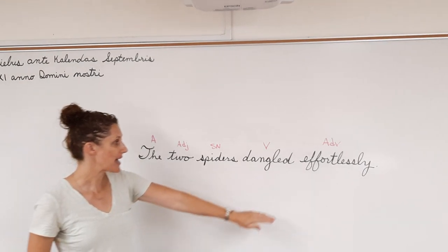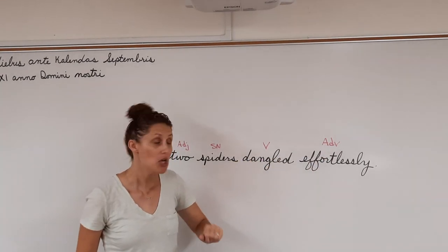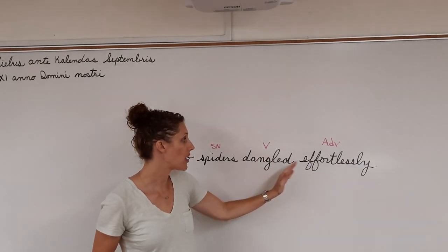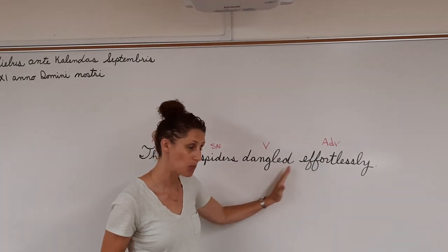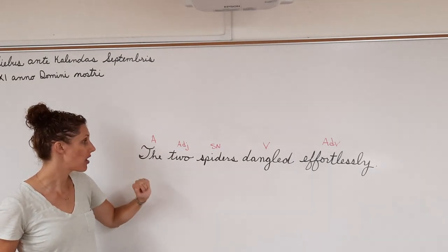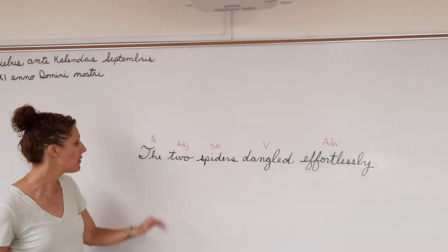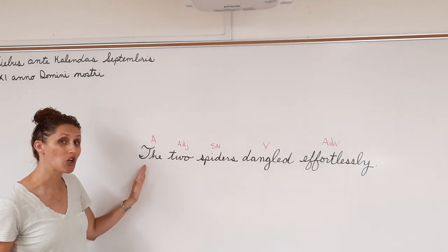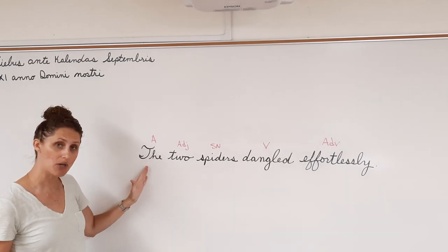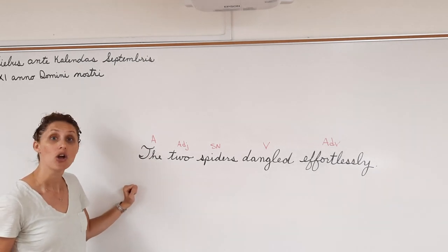Now, whenever we ask how the action was done, we know that word is going to be an adverb. So we ask how did the spiders dangle? They dangled effortlessly. So we know our answer because we asked how the action was done, we know our answer is going to be an adverb. If we ask how many of a thing there are, we know our answer is always going to be, our word is always going to be an adjective. And we have these small little words in English called article adjectives. There's only three of them: a, an, and the. And we don't ask a question to identify them. We just know what they are because there's only three of them. So we put an A above there for article adjective.